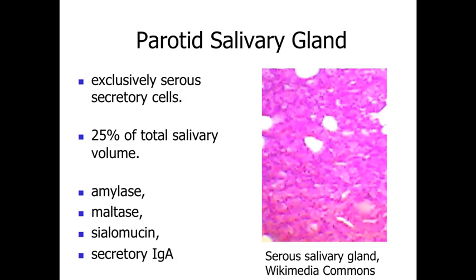We're also going to see underlying our serous-secreting epithelial cells lots of plasma cells, and the plasma cells are involved with secreting IgA. This is a form of antibody that can be released across the epithelial lining, so it has the potential to get into the saliva and mix with food particles, and in essence tag foreign materials before they even get into the body.